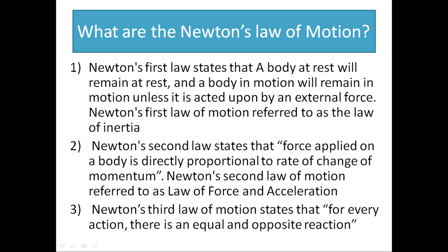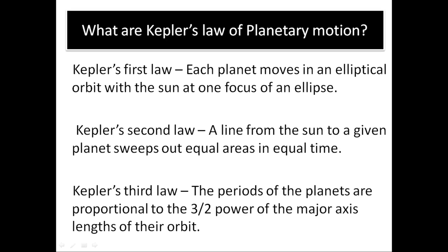Our next question is: what are Kepler's laws of planetary motion? Kepler's first law states that each planet moves in an elliptical orbit with the sun at one focus of the ellipse. Kepler's second law states that a line from the sun to a given planet sweeps out equal areas in equal time. Kepler's third law states that the periods of planets are proportional to the 3/2 power of the major axis lengths of their orbits.